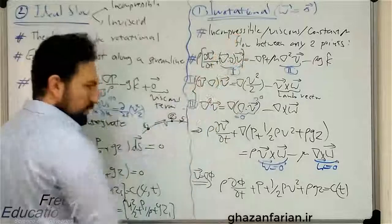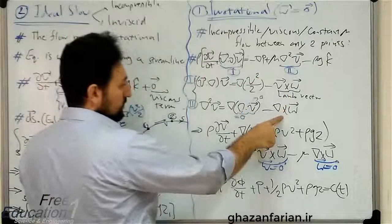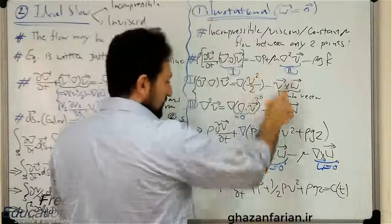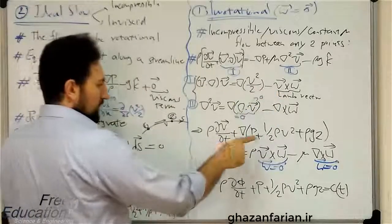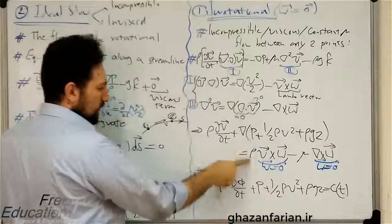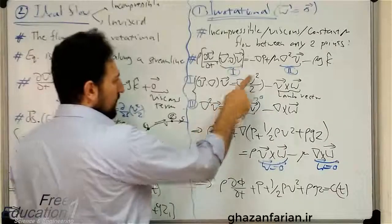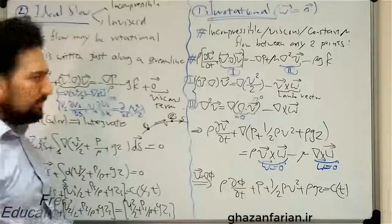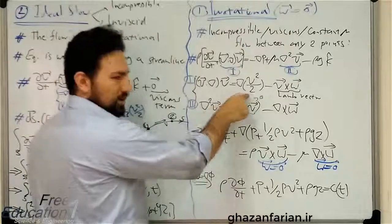Substituting these two identities into the Navier-Stokes equation: the Laplacian term is converted to the curl-of-vorticity form with viscosity, and the nonlinear term is split — keeping the first part on the left-hand side and the lambda vector on the right-hand side, with density included. We also have the pressure force and gravity force, all of which can be written as a gradient of something — the gradient of pressure, something analogous to kinetic energy, and the gradient of the z-coordinate.